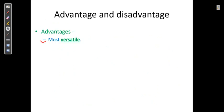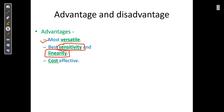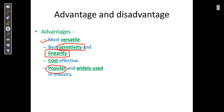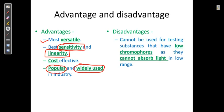The advantages of the UV detector: it is the most versatile, offering both qualitative and quantitative analysis. It has high sensitivity and good linearity, and is cost-effective and popular. The disadvantage is that it cannot be used for substances that have a low chromophore.